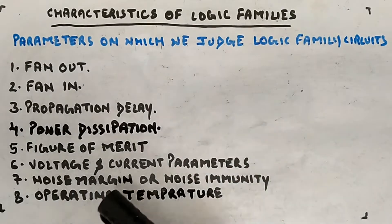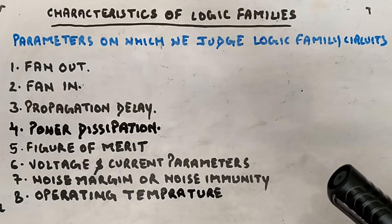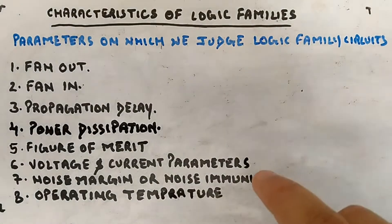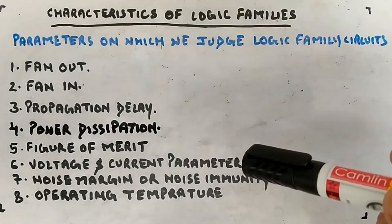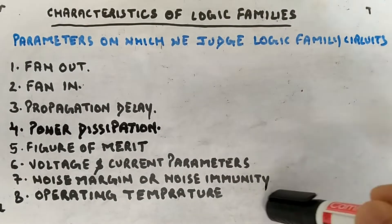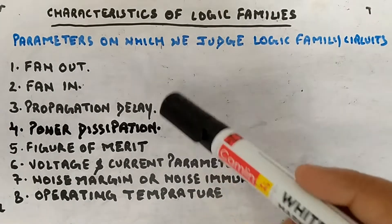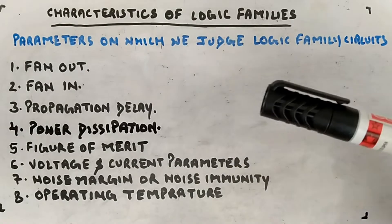From those voltage and current parameters you will learn noise margin — a very important parameter, also called noise immunity. Then there is operating temperature — what temperature range is required for proper operation. Noise margin means how much variation in voltages or currents can be tolerated by a circuit so that its normal operation does not change. Figure of merit is basically a product of power dissipation and propagation delay.